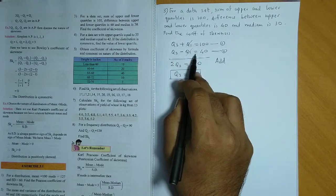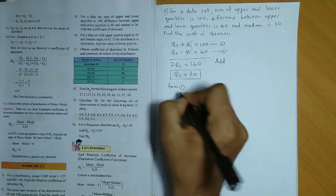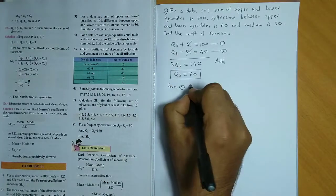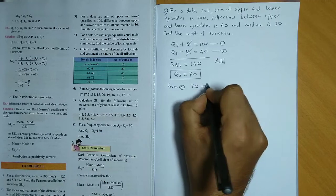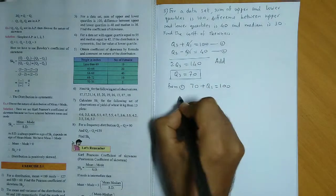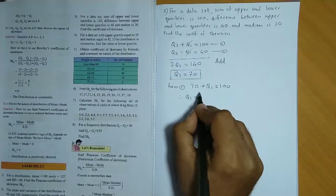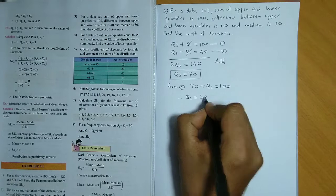Now we substitute Q3 in equation 1. Equation 1 or equation 2. So let us put this in equation 1. So from equation 1, Q3 is 70 plus Q1 is equal to 100. So this means we get value Q1 as 100 minus 70, which is 30.